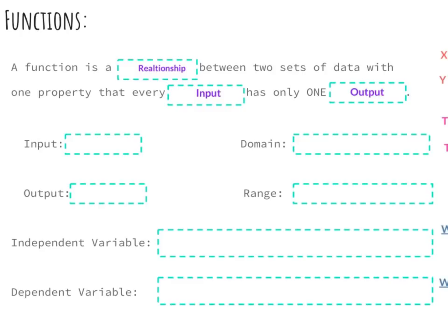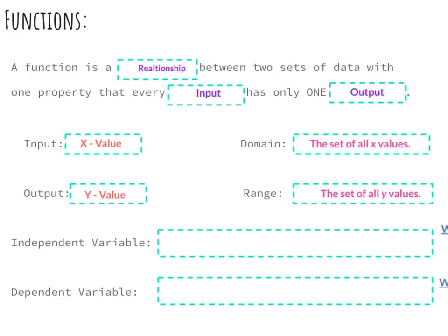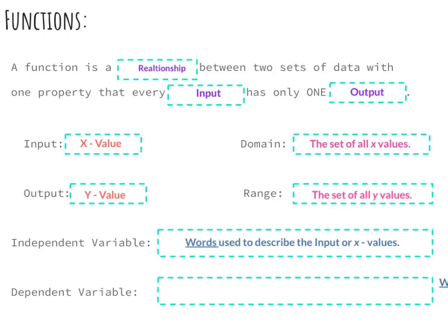What makes a function different from every other relation is it has only one output for every input. An input is any x value, and an output is any y value. The domain is the set of all x values, and the range is the set of all y values. Input and domain go with x values; output and range go with y values. The independent variable describes the input or x values using words, and the dependent variable describes the output or y values using words.